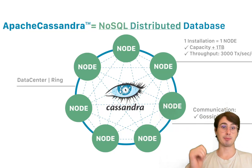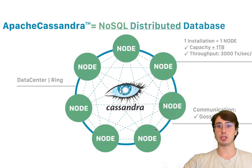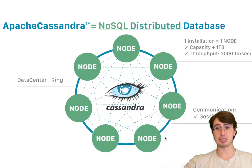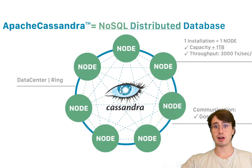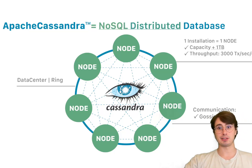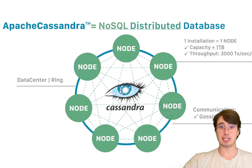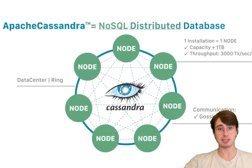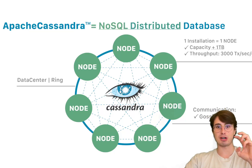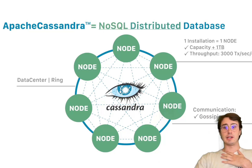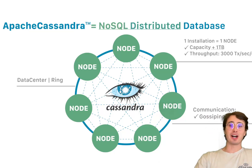Pros of Cassandra: first, it scales horizontally with ease, making it well suited for large distributed systems with massive data requirements. It also has strong fault tolerance — data is replicated across nodes and even data centers, ensuring no single point of failure. It has really high write performance, optimized for write-heavy applications with low-latency writes. And it has tunable consistency, where you can configure the tradeoff between consistency, availability, and performance.